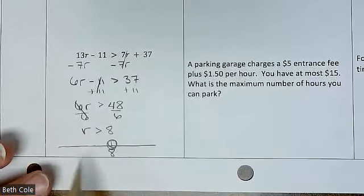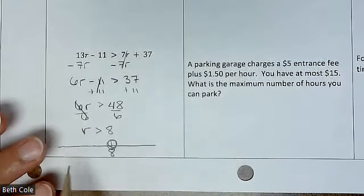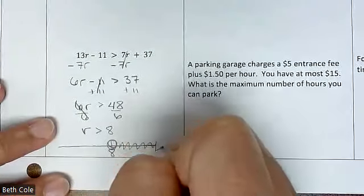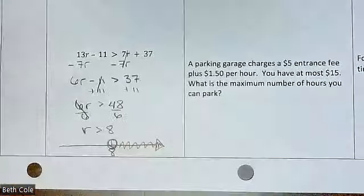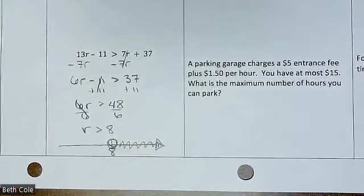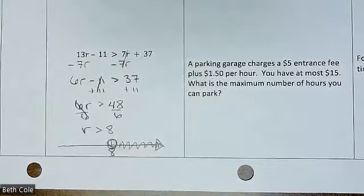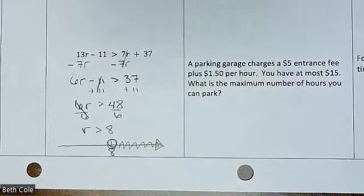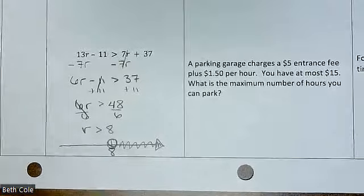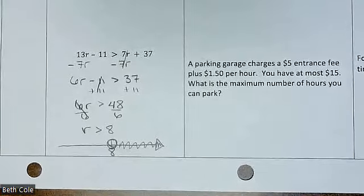Let's draw a number line. The only number you need is whatever it comes out to — on the quiz I still had people leave that number blank, so please at least give me that number. What kind of circle — open or closed? Open, because there's not an equal to. And then which way are we shading? To the right. Give me a number that's part of the answer — 10, 9, 14 million, 300. Is 8 part of the answer? No.